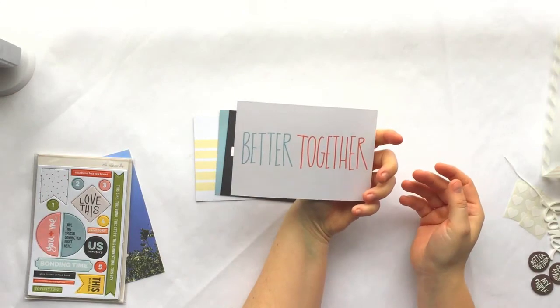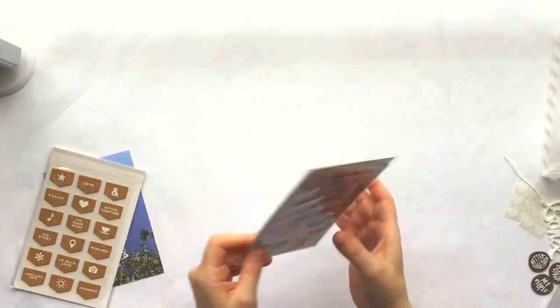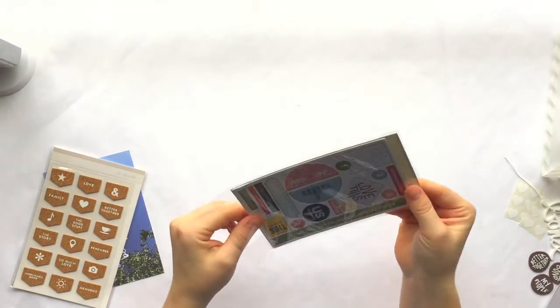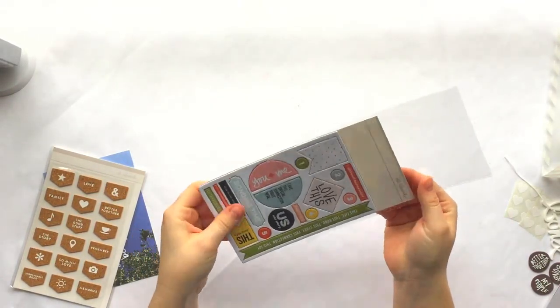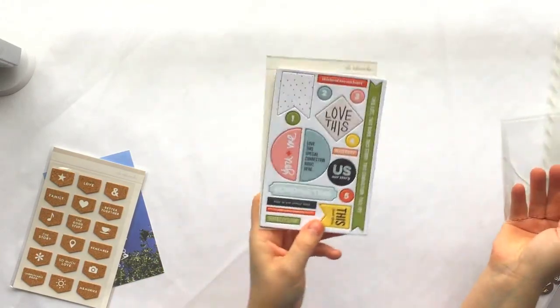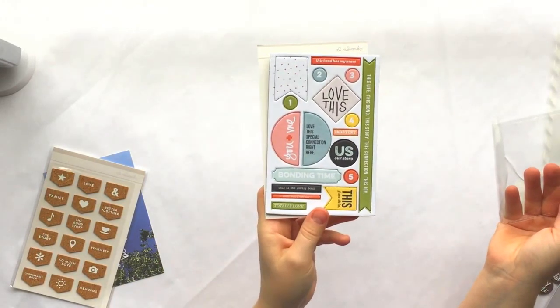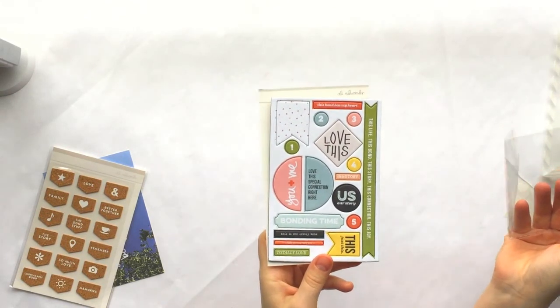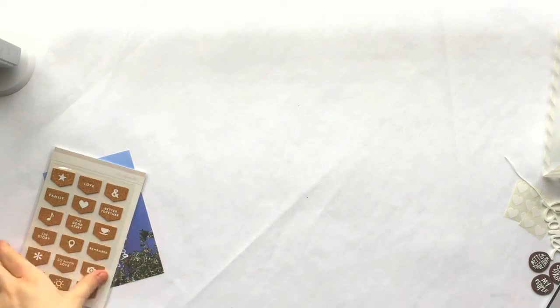This is the chipboard piece that came in the kit. And I love it because it has all the different colors in it and it has different fonts. So if you don't do the stamp set, this is a great substitute for that because you're getting all the different fonts, all the different meanings, sayings, and I just love it.